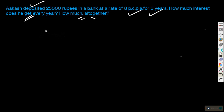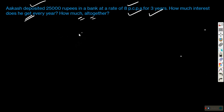Since we know that for 100 rupees the interest is 8 rupees, I can write: if interest is 8 for 100, then what is X for 25,000? If the amount is more, the interest is proportionally more — it is a matter of direct proportion — so one upon the other will be constant and we apply the proportion concept.